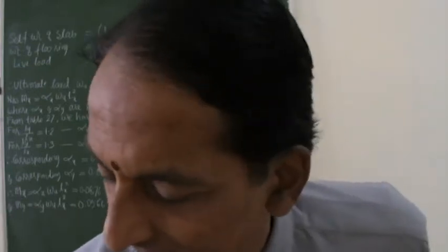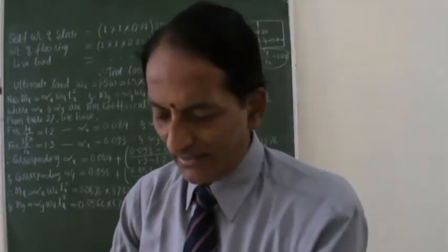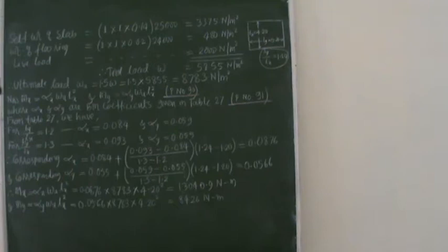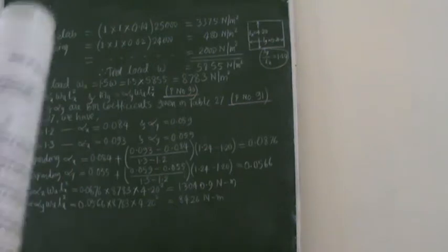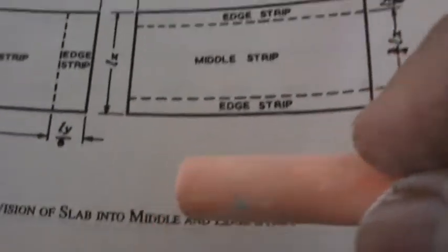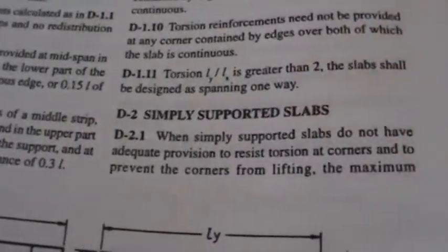See now, I will show you the moment table. If you open up page number 90, page number 90 is here. Here I will read one sentence here now.